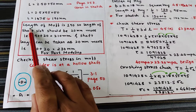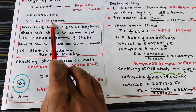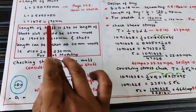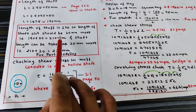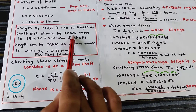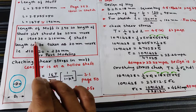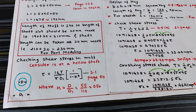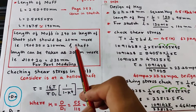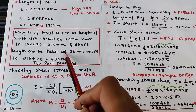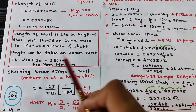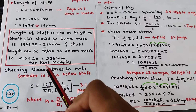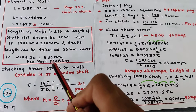For part drawing purposes, the length of the slot is taken as the MUF length plus 20 mm extra: 190 + 20 = 210 mm. The shaft length is taken as a further 20 mm more: 210 + 20 = 230 mm. These extended dimensions are only applicable for part modeling.